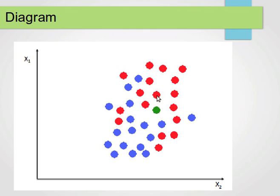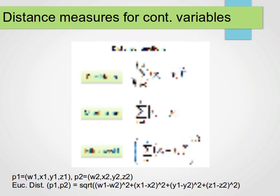Let's say the first nearest, second nearest, third nearest, fourth nearest, and fifth nearest points are identified. We notice that among these five nearest neighbors, three belong to the red class and two belong to the blue class, which means we predict the new point to belong to the red class, because the majority voting tells us that three is larger than two — the red class is the majority, so we choose the red class.